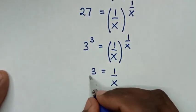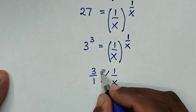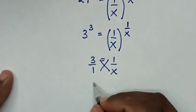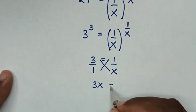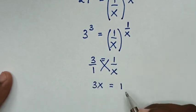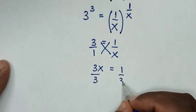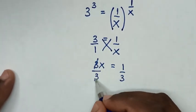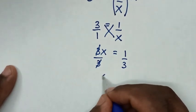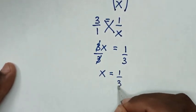This 3 is the same as 3 over 1, so I will cross multiply. Then 3 times x equals 3x equals 1 times 1, which is 1. Then we divide by 3 on both sides. This 3 will cancel with this 3, so x equals 1 over 3.